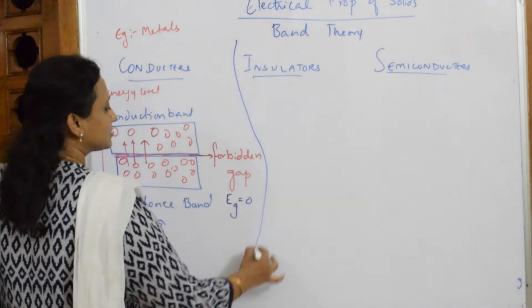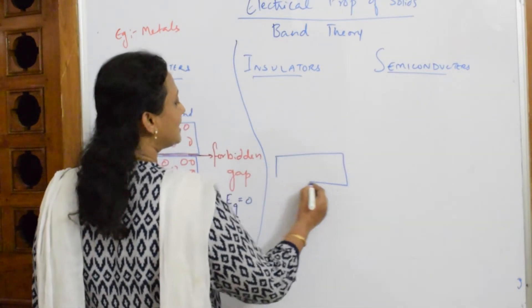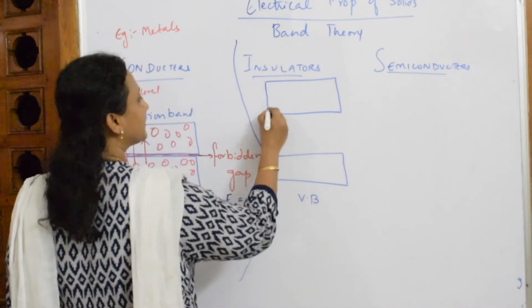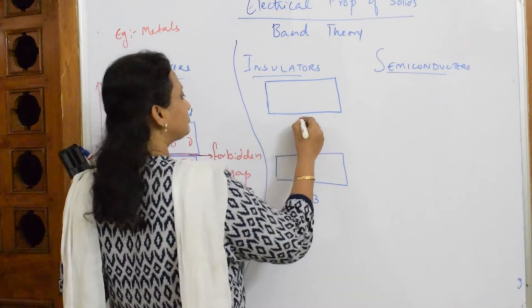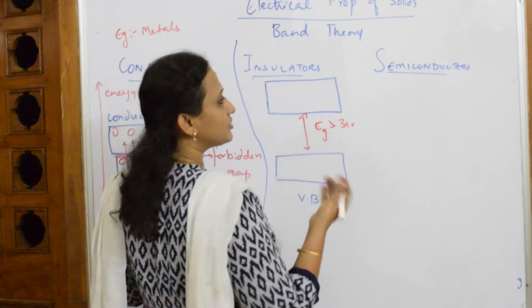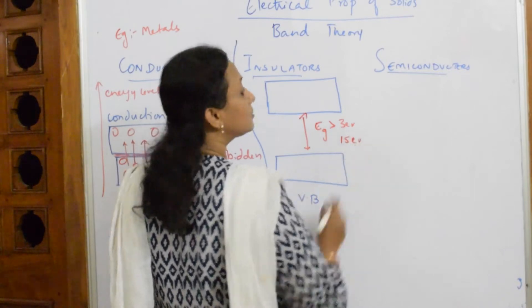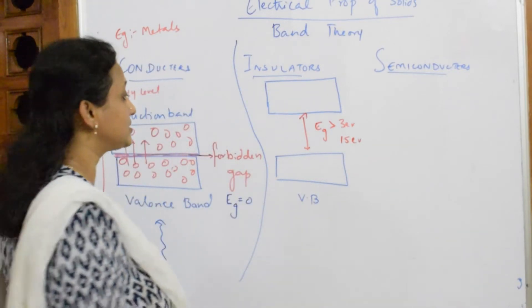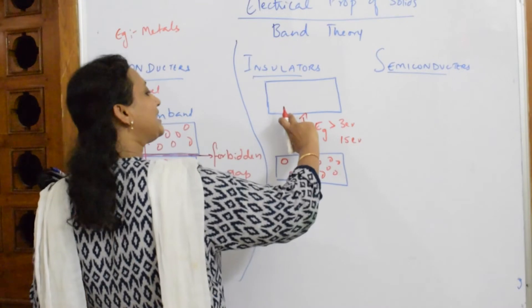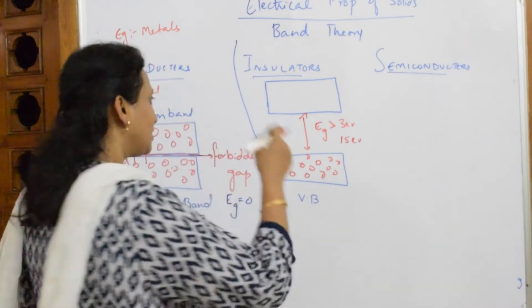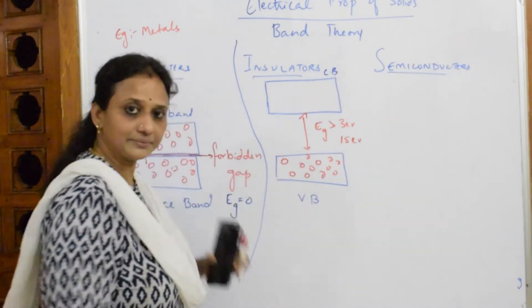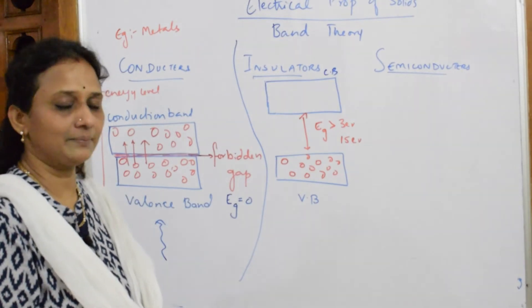Now, when I speak about insulators, I very well said, again, you have valence band here and you have in insulators, a large gap of the conduction band. Now, how much is this gap? If I speak, EG is greater than 3 electron volts. It is almost, if I be specific, it is almost 15 electron volts. The energy gap is 15 electron volts in insulators. Now, you have here also electrons. Now, what happens? Because of this wide gap in between valence band and conduction band, the insulators are not able to conduct current. What is the best example? Plastic, right? Plastic is an insulator.